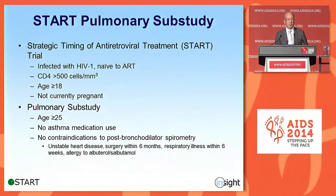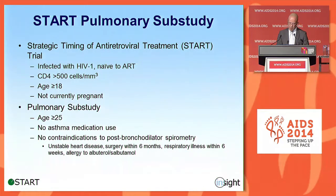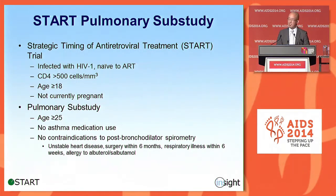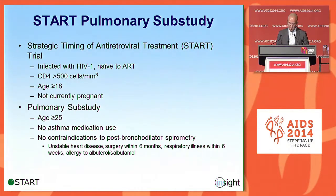For the pulmonary sub-study, we had a few additional exclusions. One was inclusion of age above 25. The reason for that was related to our primary outcome — longitudinally looking at lung function decline — since those under the age of 25 may actually gain some lung function over time. We also excluded patients with asthma, due to lung function being highly variable and somewhat unreliable when you have asthma. We also excluded patients who had a contraindication to either spirometry or the use of albuterol or salbutamol.